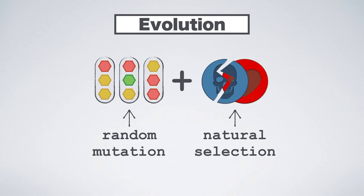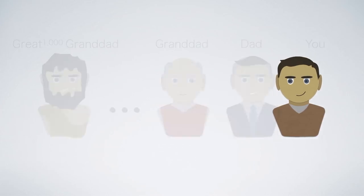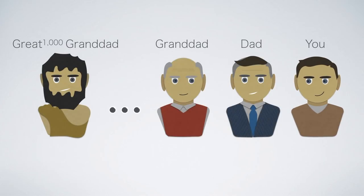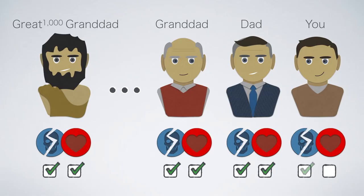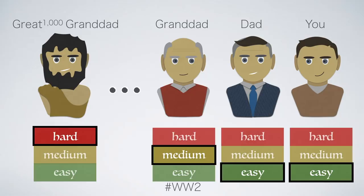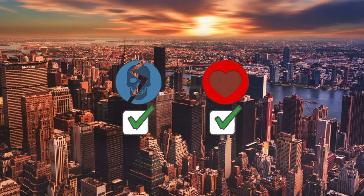And then everything changed. You are the result of an unbroken chain of hundreds of thousands of ancestors, all of whom managed to not die young and attract a mate. And your job is to not break this chain. No pressure. But let's be real — you are playing the game on easy settings. What we call civilization is, in evolutionary terms, a giant selection pressure remover.